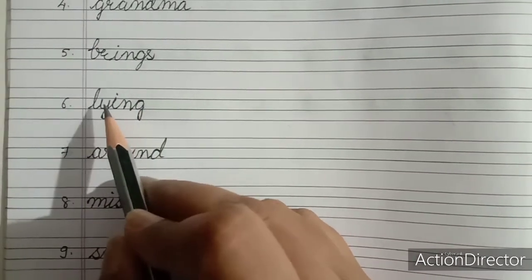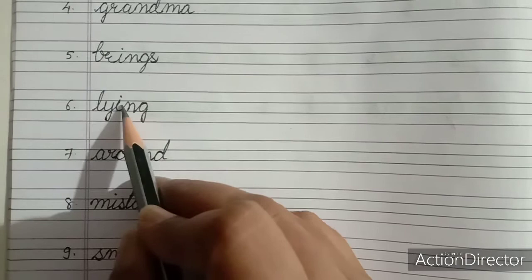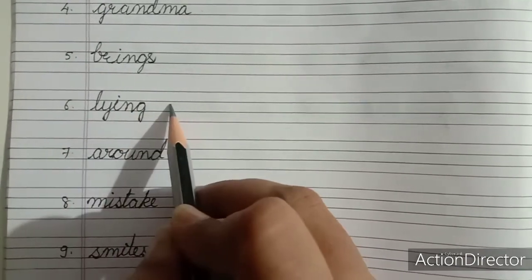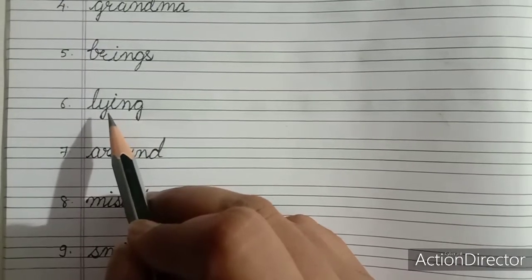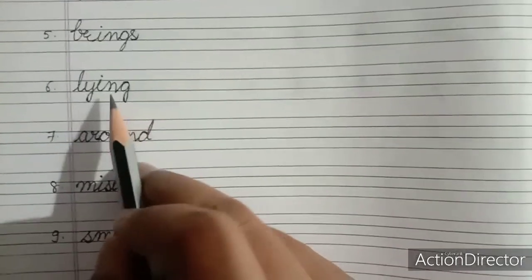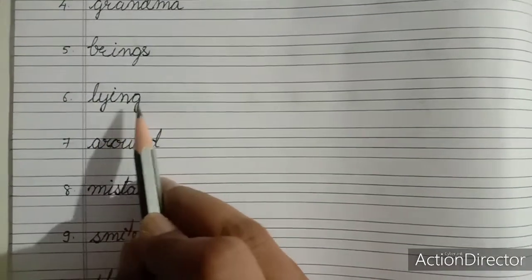Sixth is lying. L-Y-I-N-G. Lying. Lying means lying down, or when you lie on the bed then we say lying on the bed. So L-Y-I-N-G. Lying.